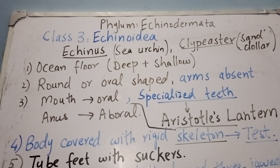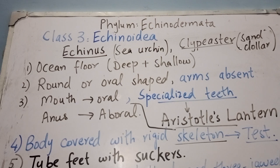The third class is Echinoidea. The most common member is the sea urchin, with scientific name Echinus — a Greek word meaning spiny or hedgehog-like, as the sea urchin body is covered with spines. Another well-known example is Clypeaster, commonly known as sand dollar or cake sea urchin. Members are found on the ocean floor in both deep and shallow water. Their body is round or oval-shaped and they have no arms.